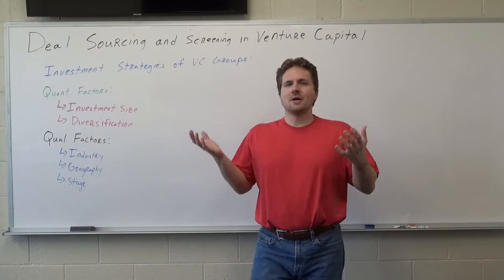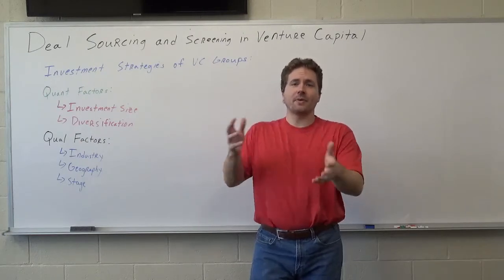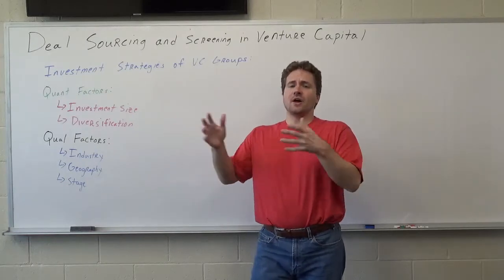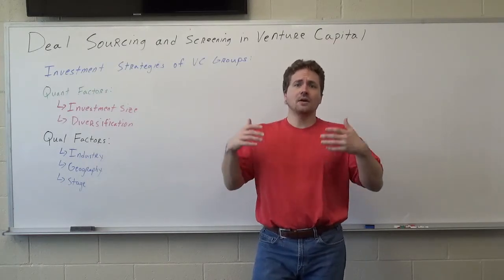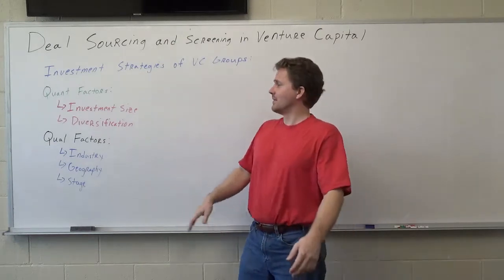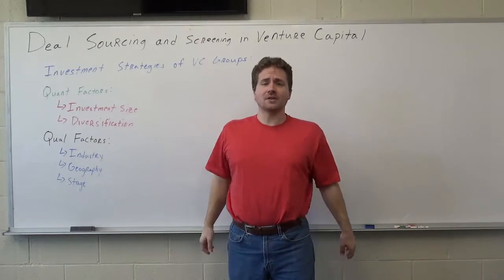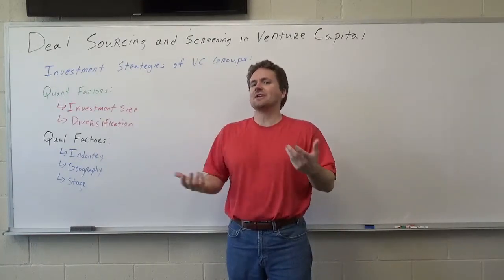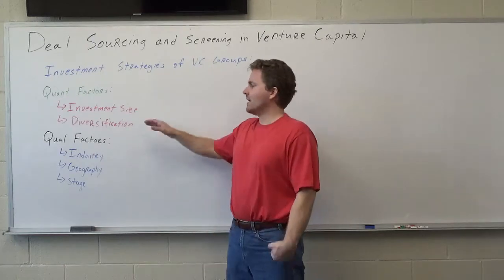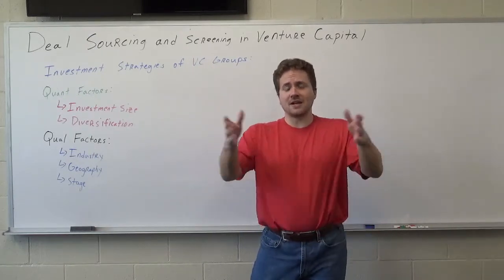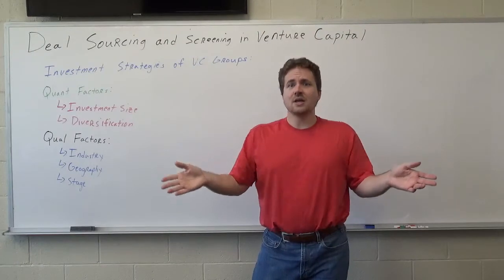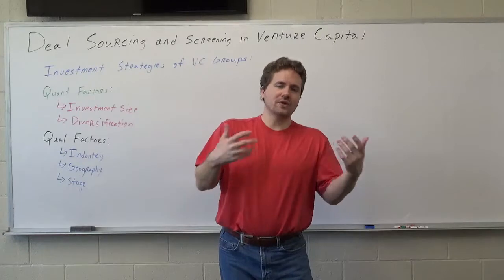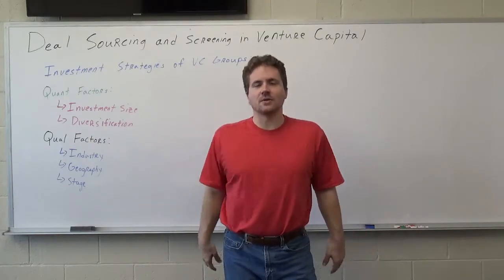Some venture capital groups want their portfolio companies in all different industries so that if one sector goes down, the others may not be hurt as badly. On the other hand, some VCs specialize in one area — all 10 in tech, or all 10 in biopharma. The shotgun approach across 10 industries increases the chance of something succeeding, and if one sector of the economy goes down, hopefully the rest doesn't.